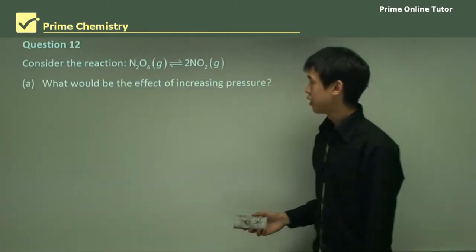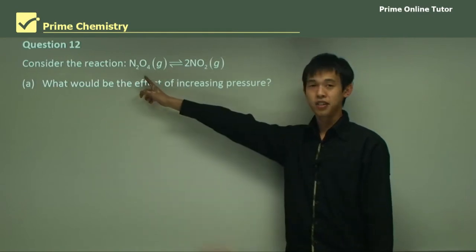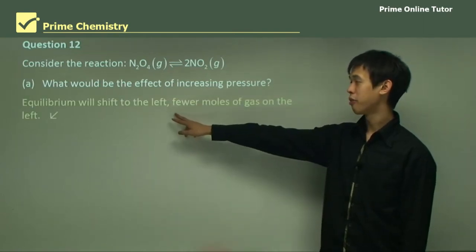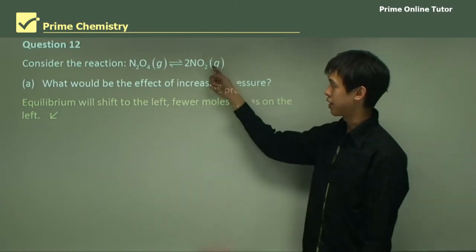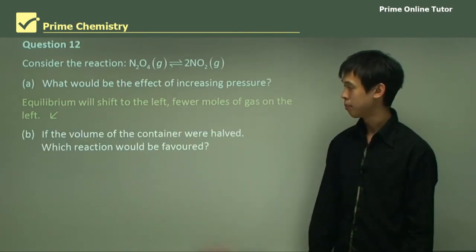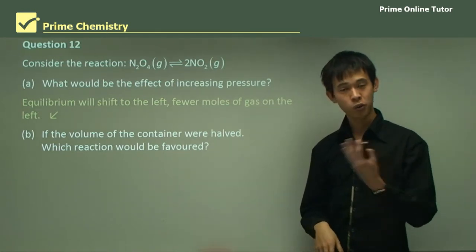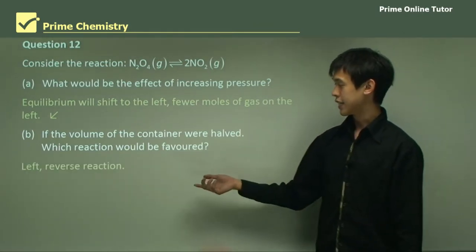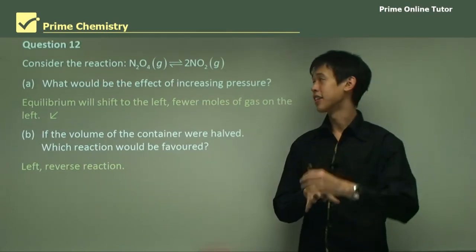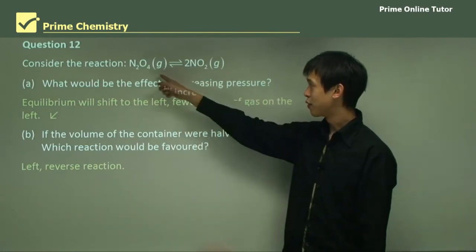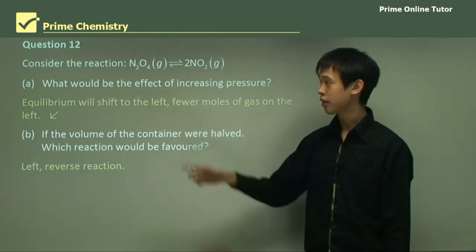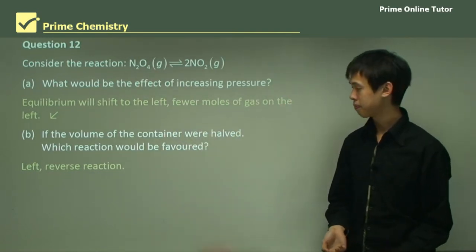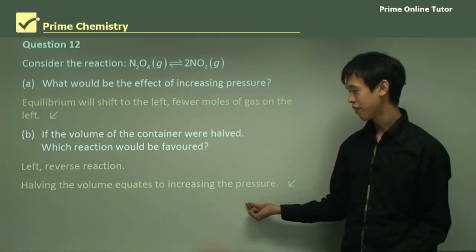Question 12: for the reaction N₂O₄ → 2NO₂, what is the effect of increasing the pressure? The equilibrium will shift to the left because there are fewer moles of gas on the left side. Part B: if the volume of the container were halved, which reaction would be favoured? Halving the volume essentially increases the pressure, since we're reducing the volume while keeping everything else the same. It will again shift to the left because there are fewer moles of gas on that side, taking up less space.